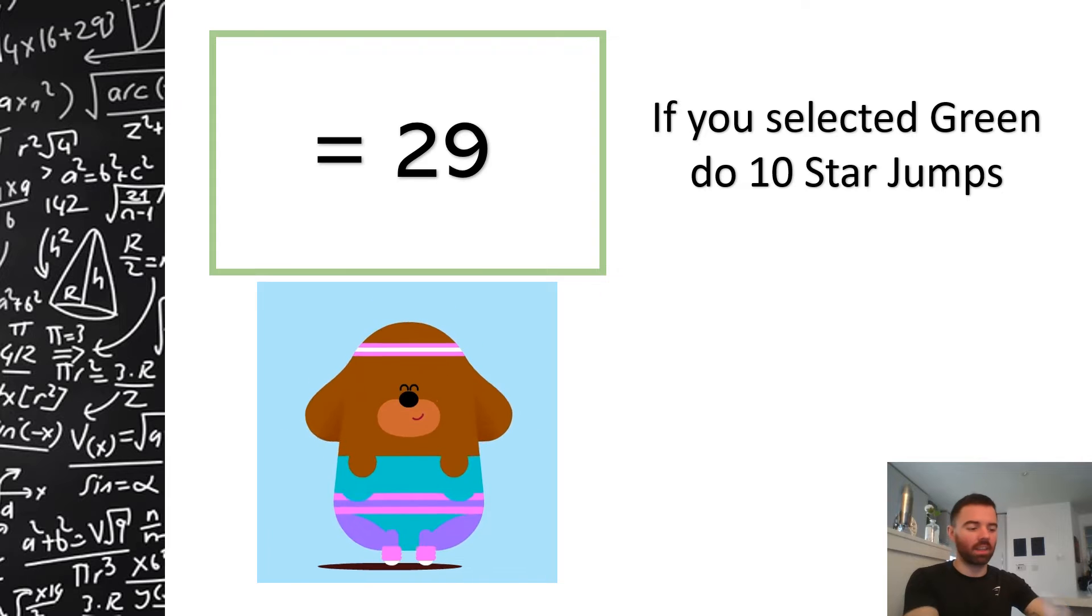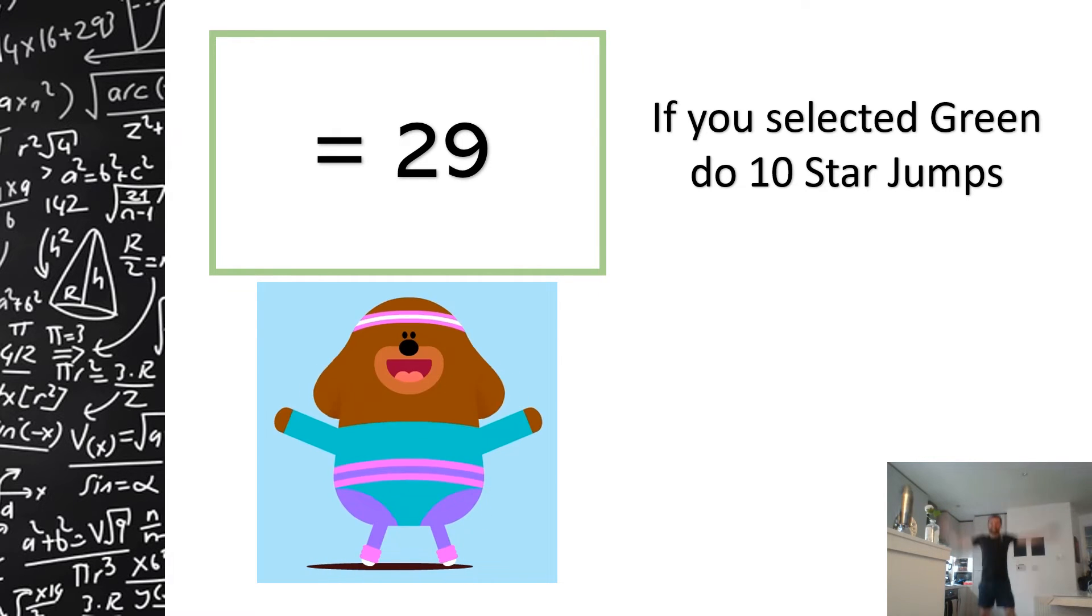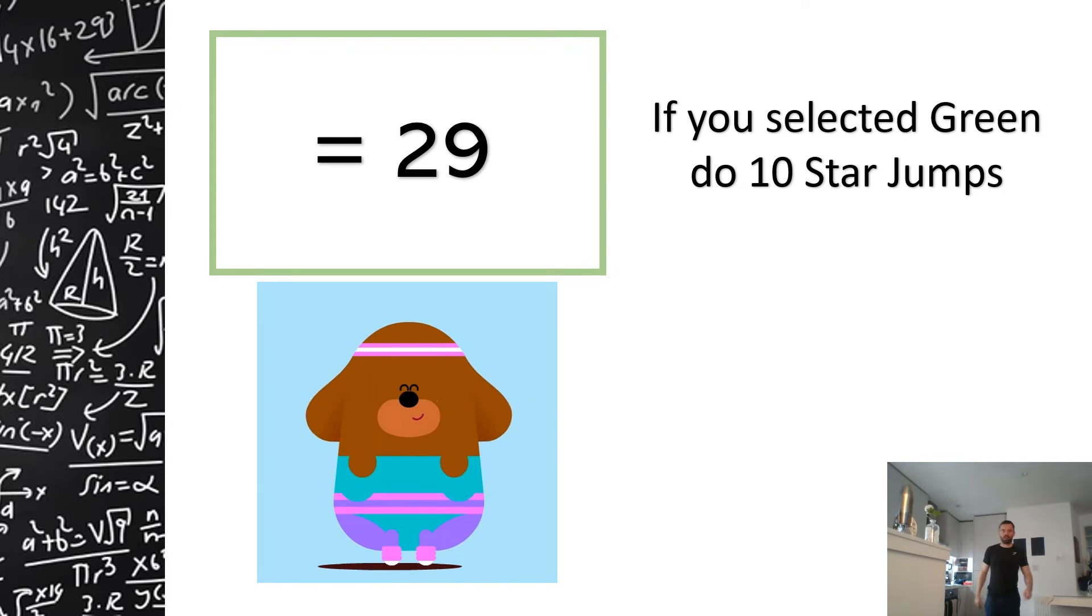Computer, what's going on? Oh, well I selected green. If you selected green, do 10 green star jumps. Oh, give me a sec. Okay, one, two, three, four, five, six, seven, eight, nine... don't enjoy star jumps.